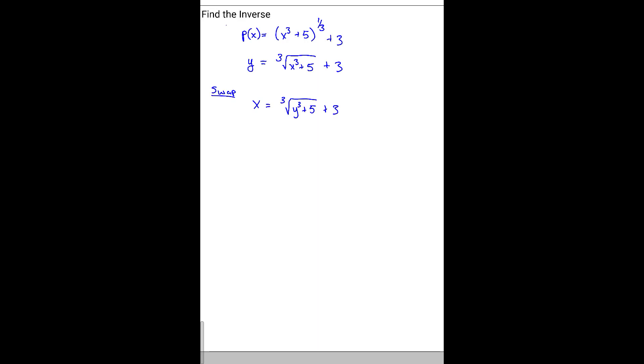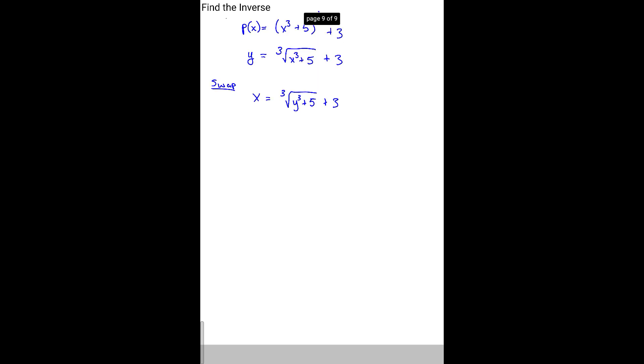So now, whenever we find the inverse, we've got to go ahead and solve for our new y value. So, we're going to subtract 3 on both sides. So x minus 3 equals the cube root of y to the third plus 5.